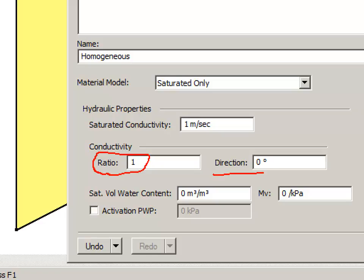And the direction of the principle kx and ky is zero. In other words, kx is horizontal and ky is vertical.